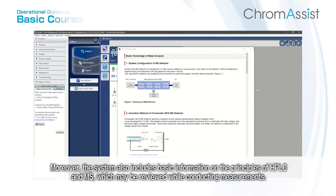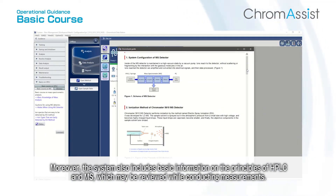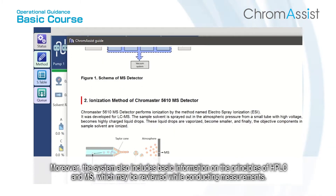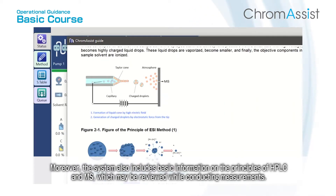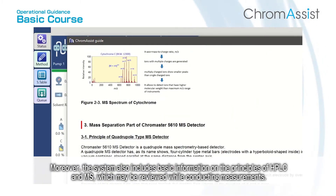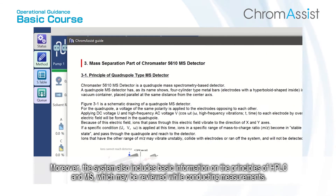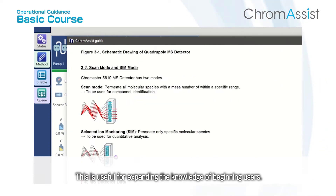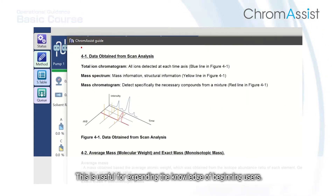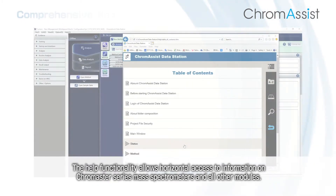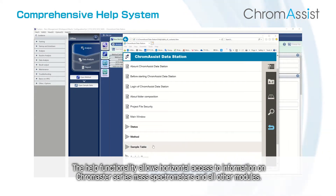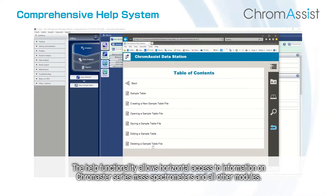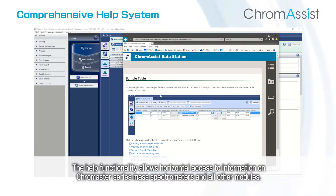The system also includes basic information on the principles of HPLC and MS, which may be reviewed while conducting measurements — useful for expanding the knowledge of beginning users. The help functionality allows horizontal access to information on the Chromaster series, mass spectrometers, and all other modules.